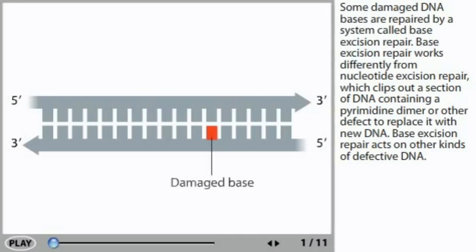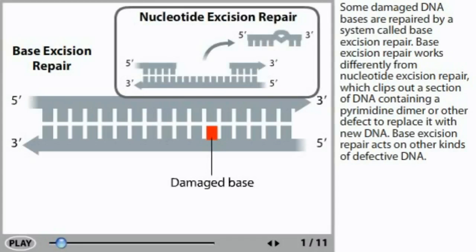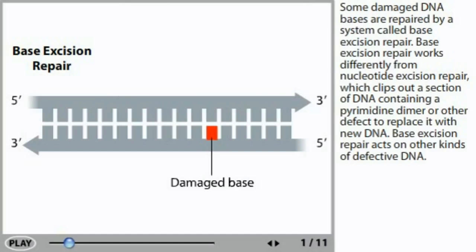Some damaged DNA bases are repaired by a system called Base Excision Repair. Base excision repair works differently from Nucleotide Excision Repair, which clips out a section of DNA containing a pyrimidine dimer or other defect to replace it with new DNA. Base excision repair acts on other kinds of defective DNA.